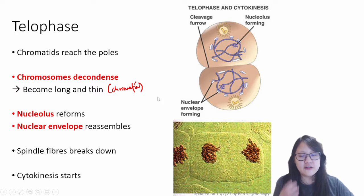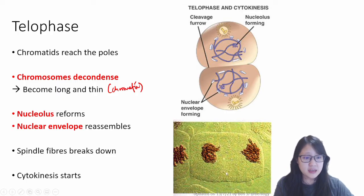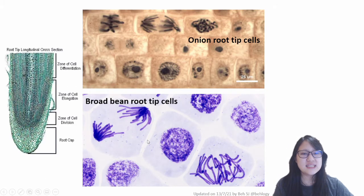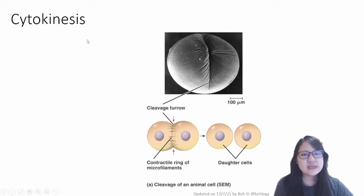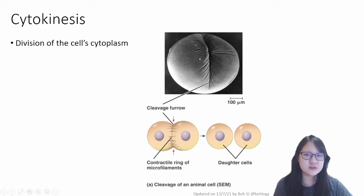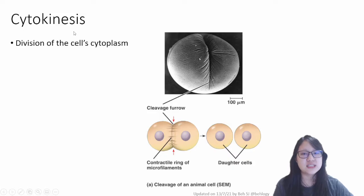Right at the end of telophase, cytokinesis starts. It's not exactly two cells yet until cytokinesis begins. Cytokinesis is the division of the cell cytoplasm. The two nuclei are formed first through the process of mitosis — that's nuclear division — and then cytokinesis finishes the deal by dividing the cytoplasm as well.